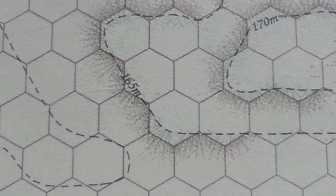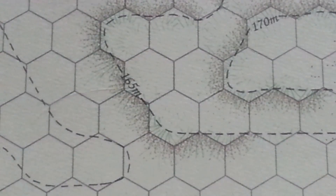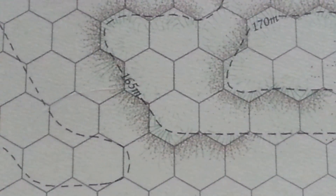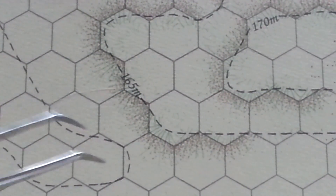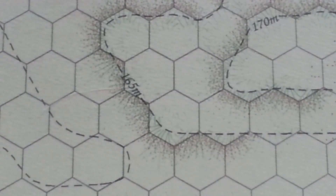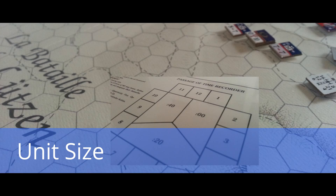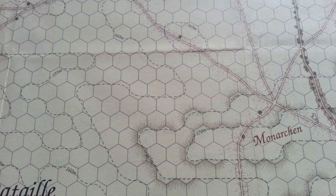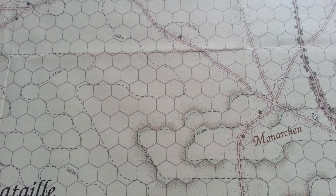That can vary for individual titles — if the designer feels they need to adjust that to fit their maps, they can. But the system looks at every hex as 100 meters. Now that we have scale for time and space defined, we can consider another scale: unit scale.